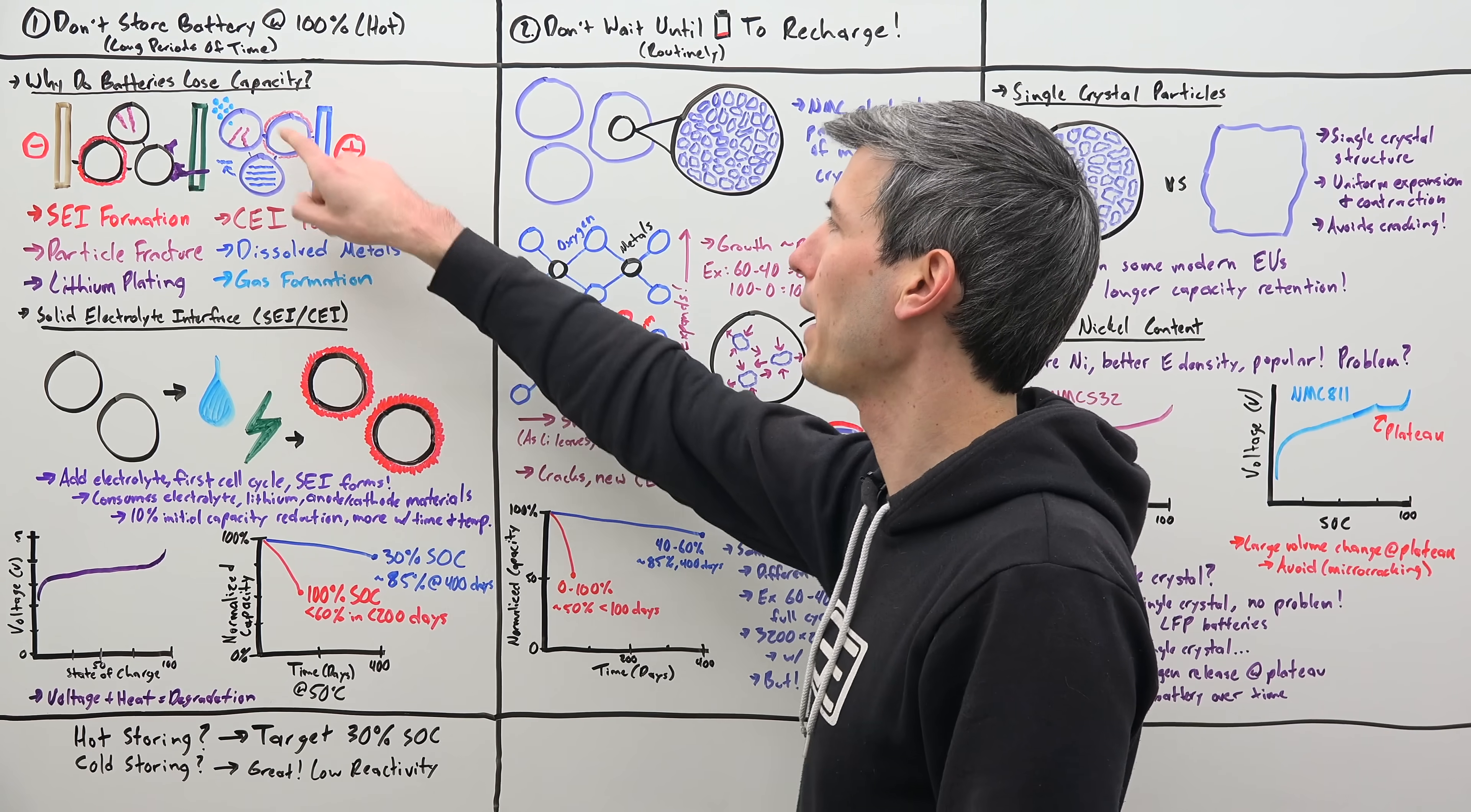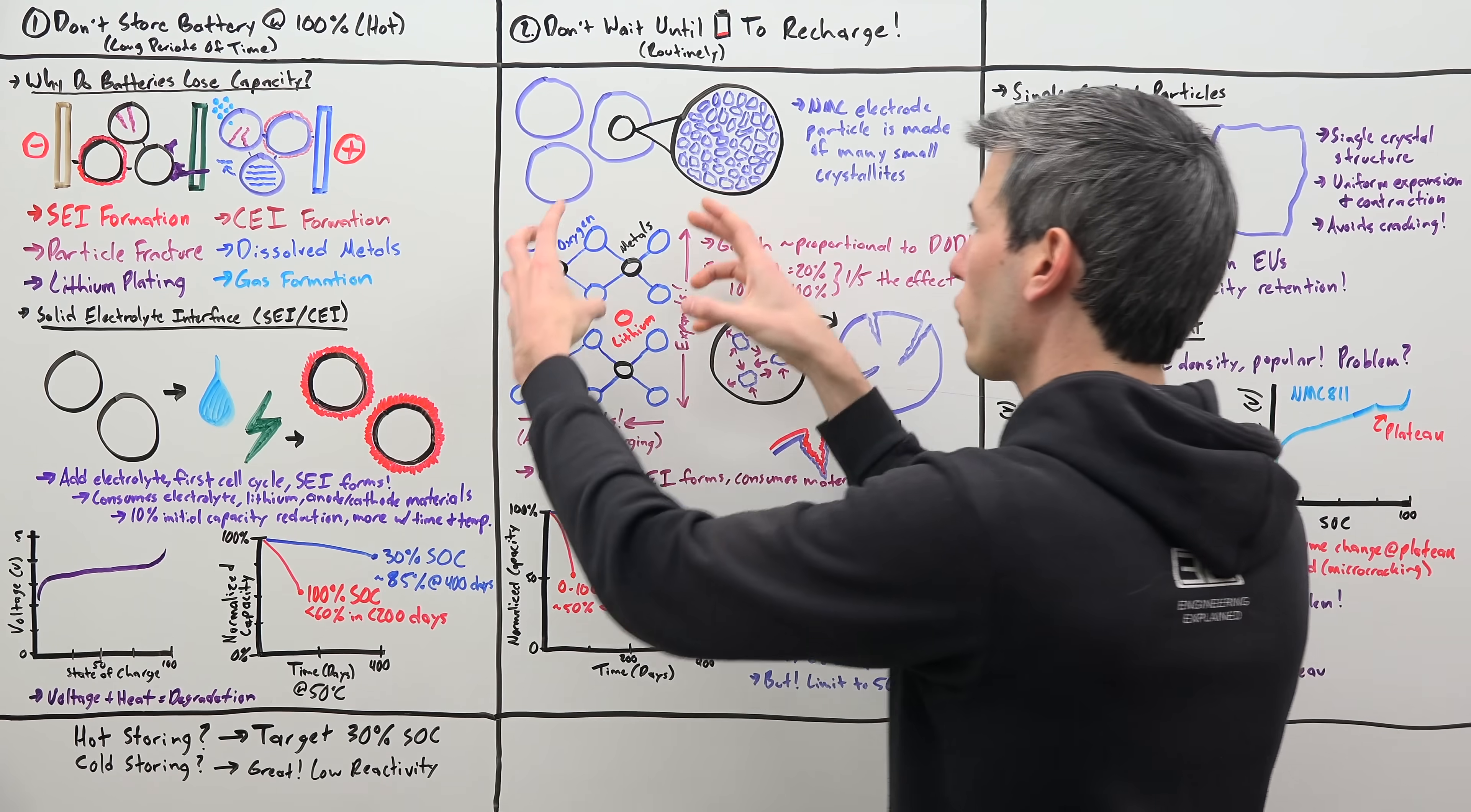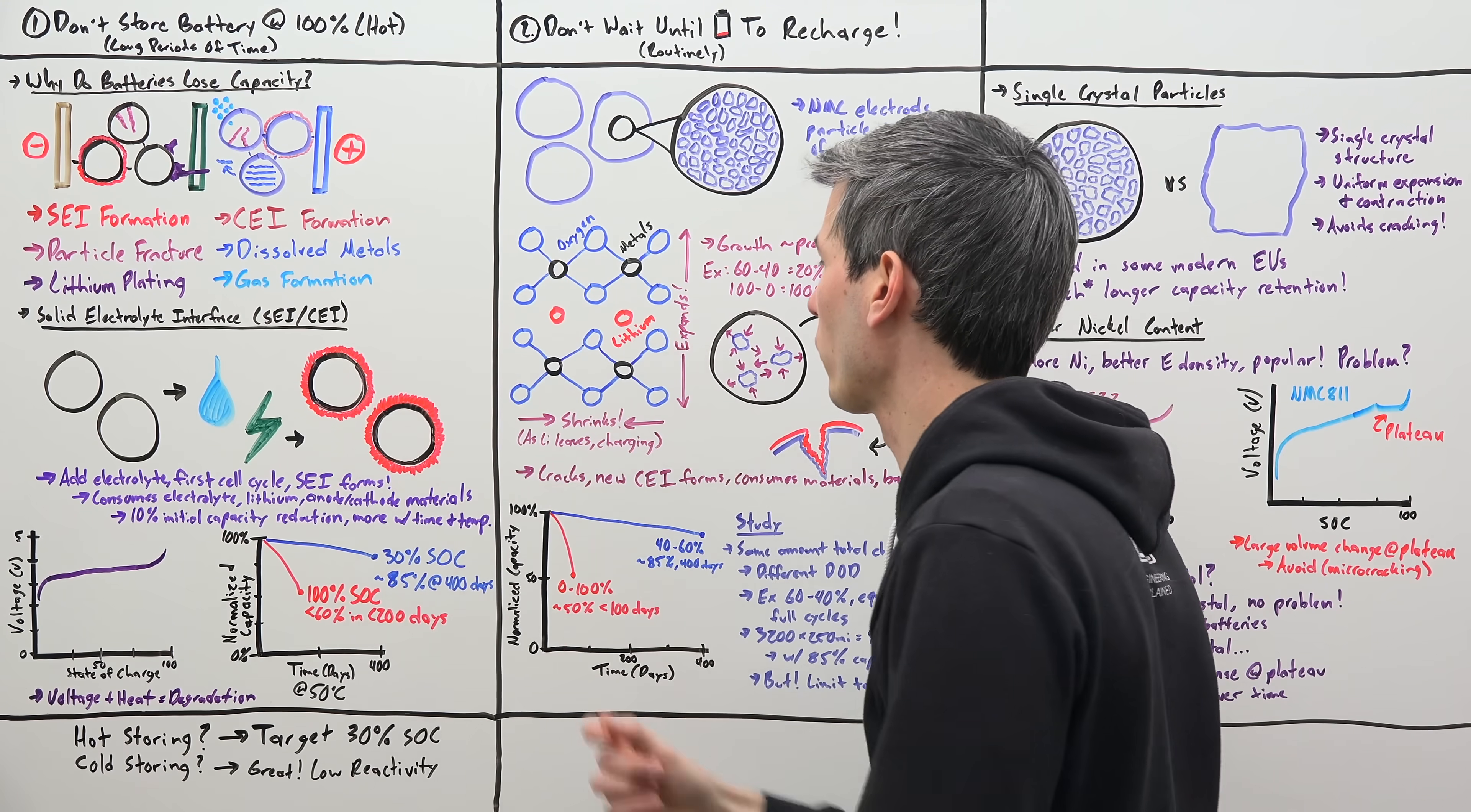Well let's look at the particles that make up the cathode. And if we zoom in on one of these electrode particles, we can see that it's made up of many, many small crystallites. And each one of these small crystallites has its own structure that's repeated. So you've got oxygen, metals, and lithium that's moving to and from the anode, back to the cathode, back to the anode.